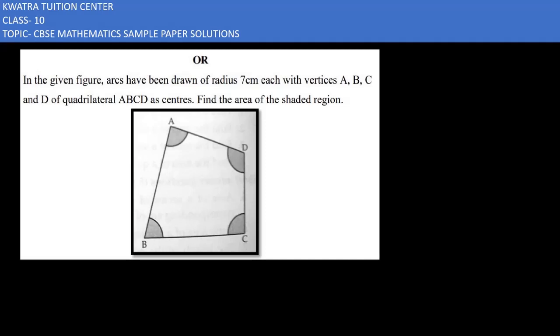Now let's start with the OR part of question number 24. It says in the given figure, arcs have been drawn of radius 7 centimeters each with vertices A, B, C, and D of quadrilateral ABCD as centers. Find the area of the shaded region. So this is our figure, whether it is A or B or C or D.